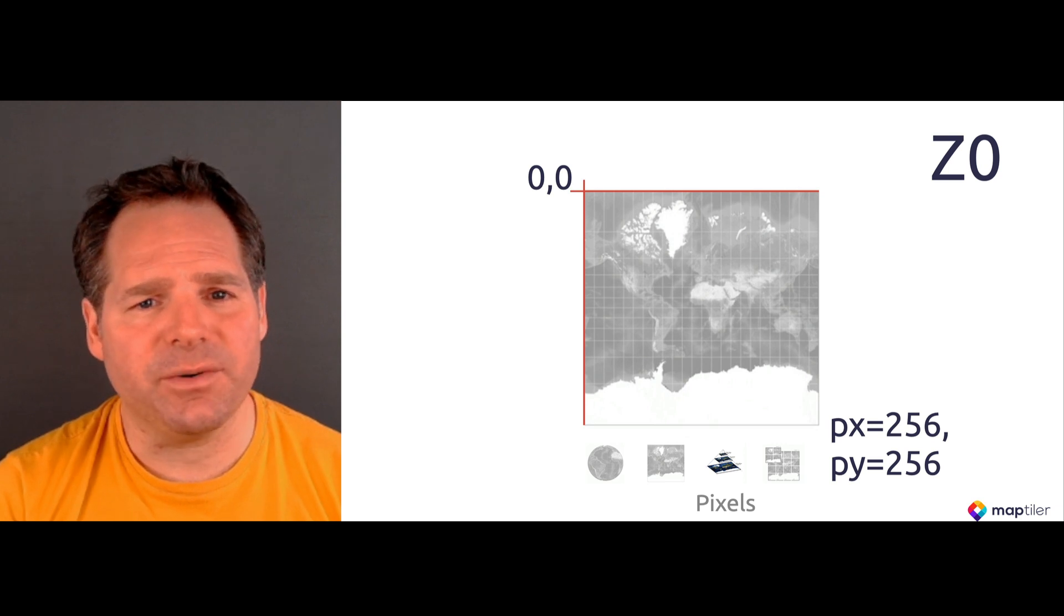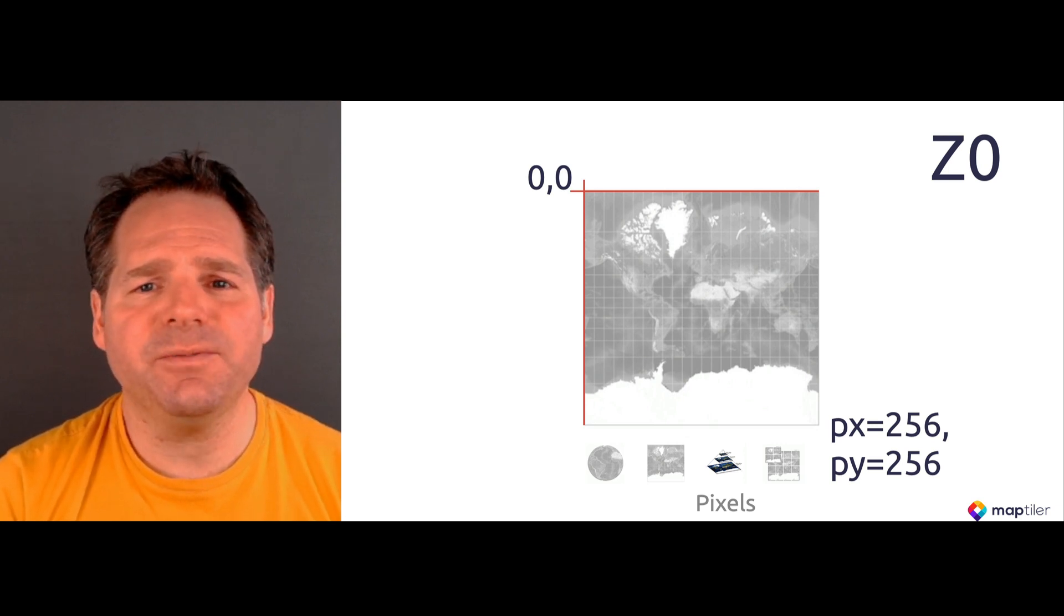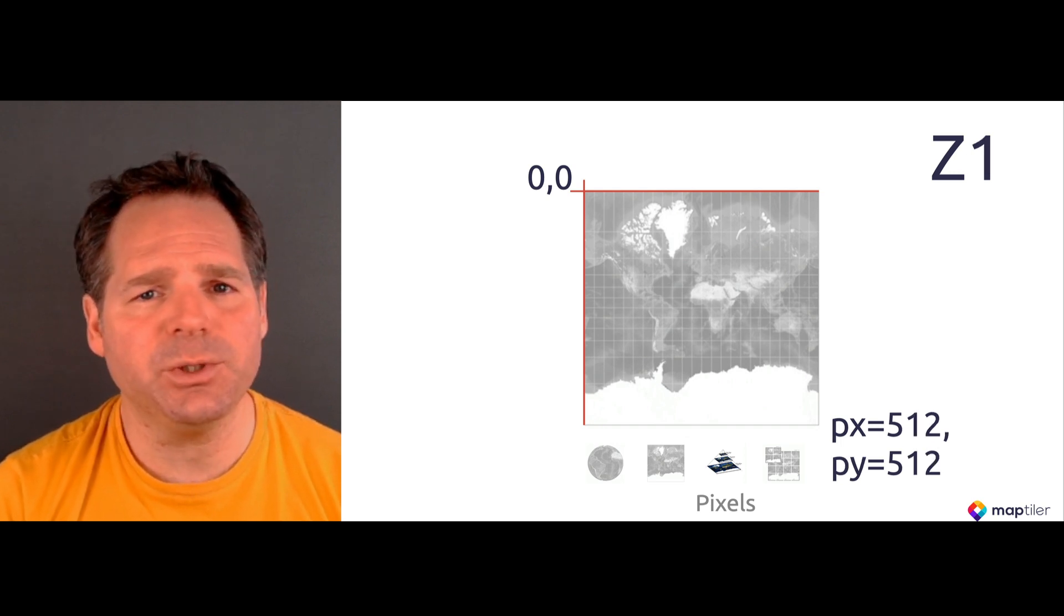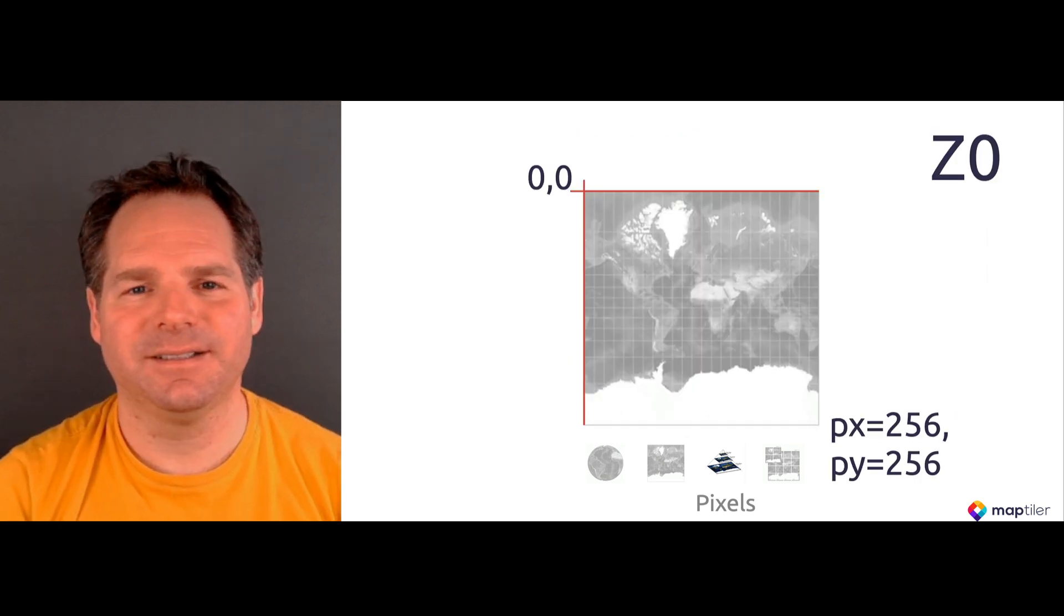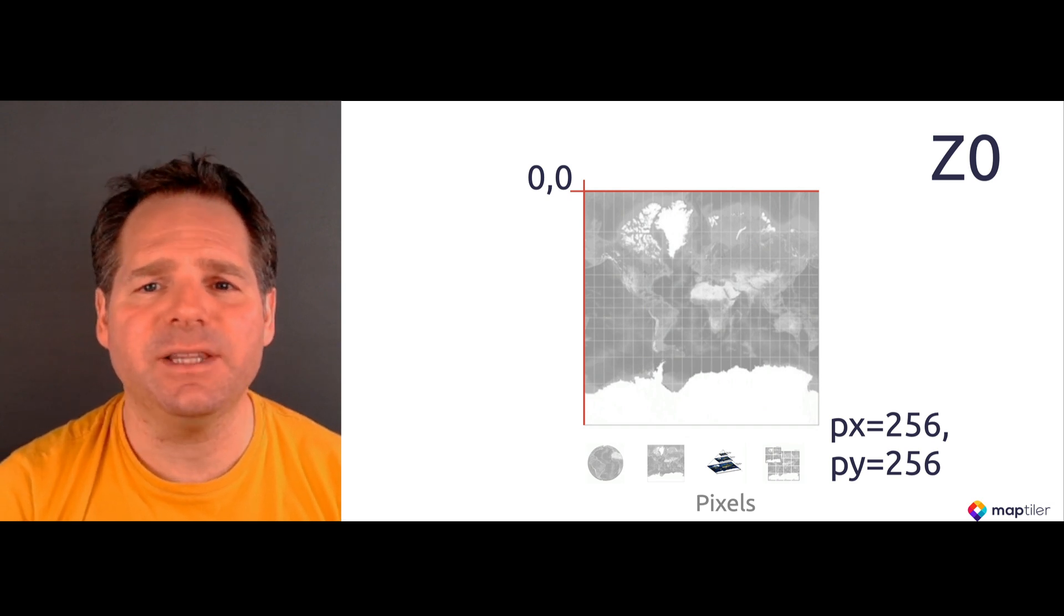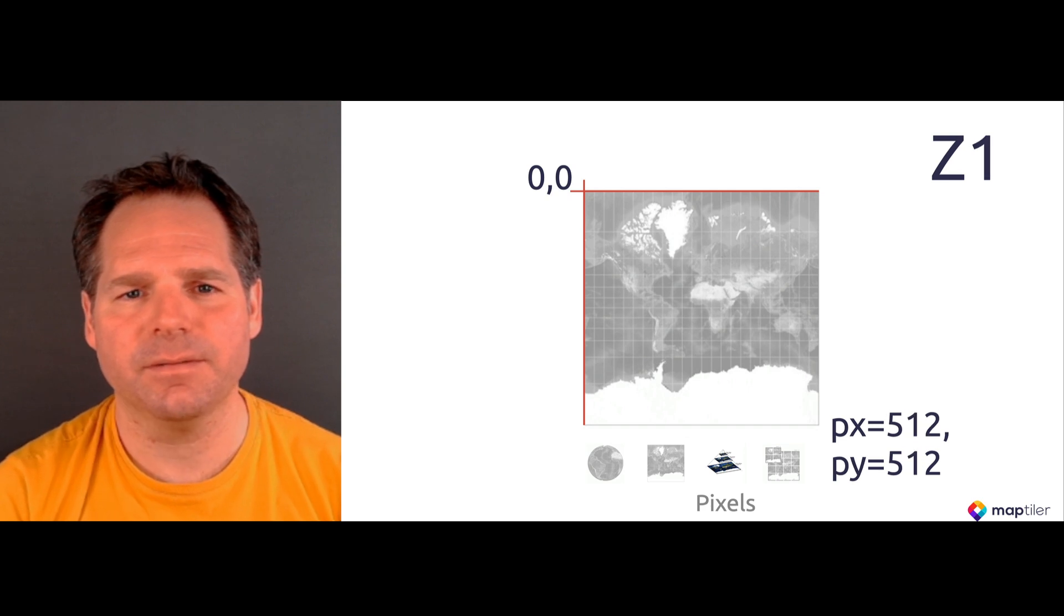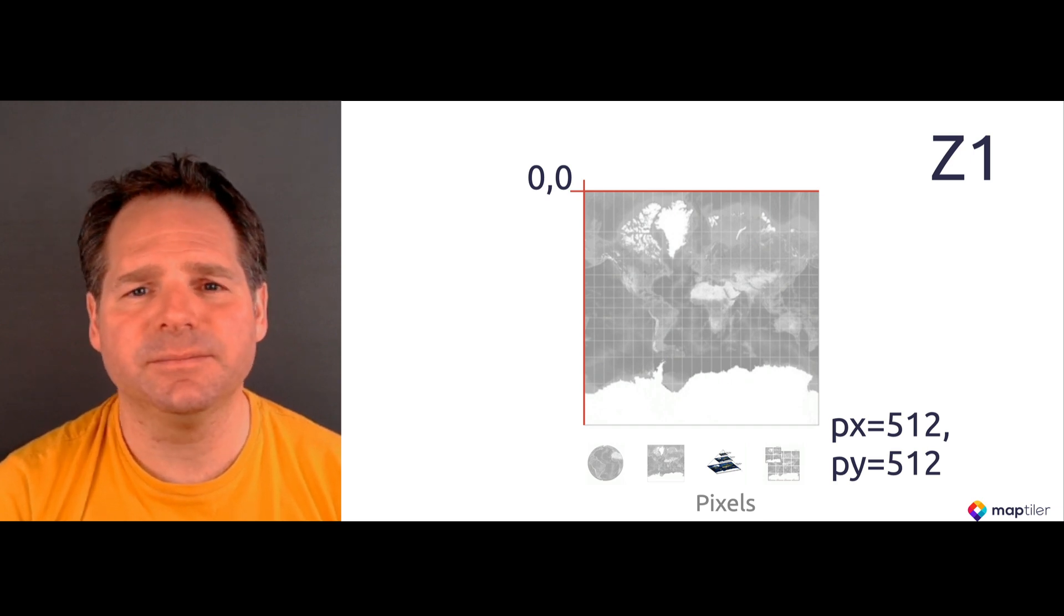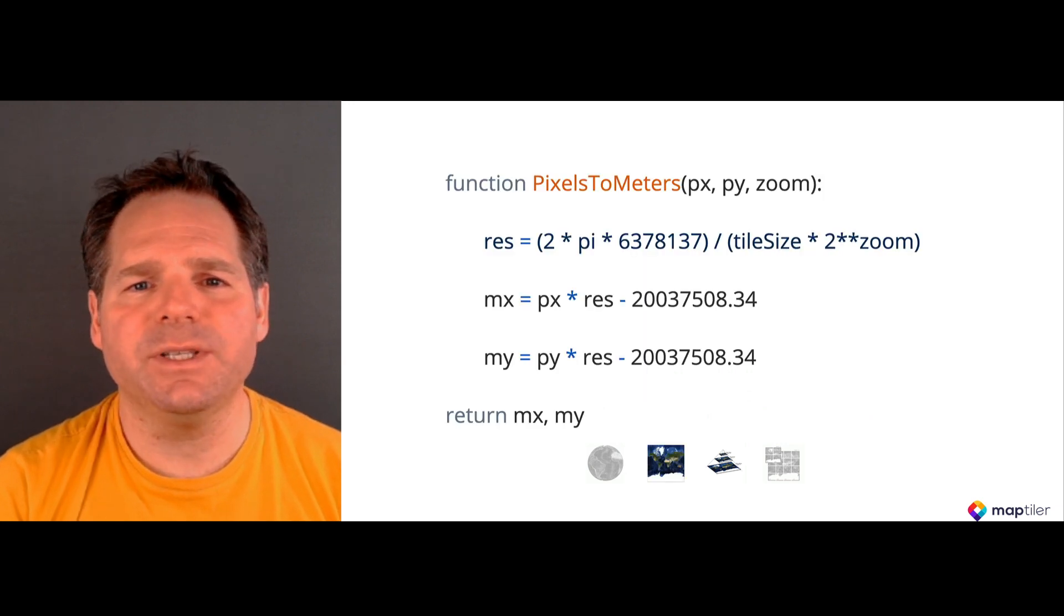The top level, Zoom Zero, usually has 256 by 256 pixels. The next level 512 by 512, and so on. If we look at Zoom Level Zero, the origin of the grid for screen coordinates is in the top left corner, and the maximum coordinates can be found in the bottom right corner. Zoom Level 1 has double the tiles, so the maximum coordinates are double those of Zoom Level Zero. And this pattern repeats for all the following Zoom Levels as well.